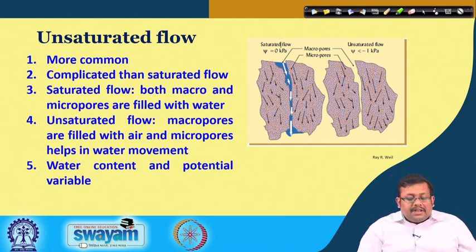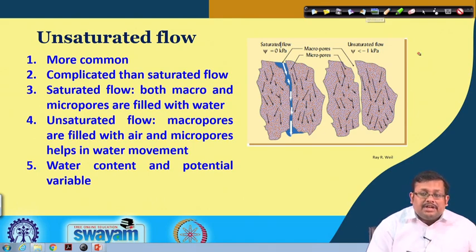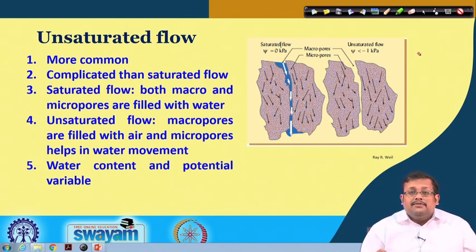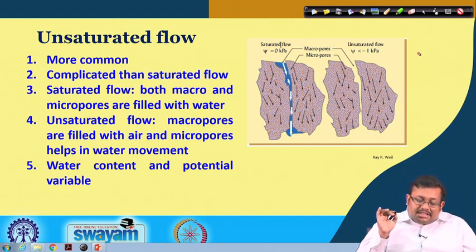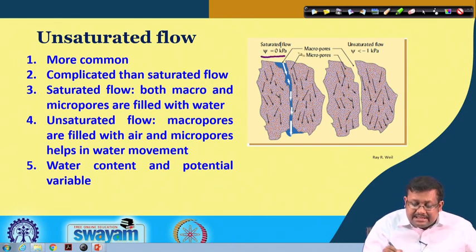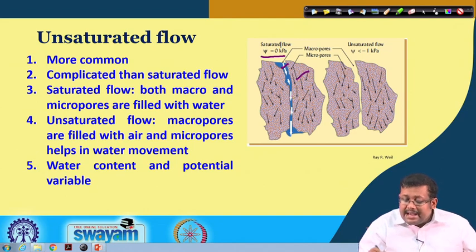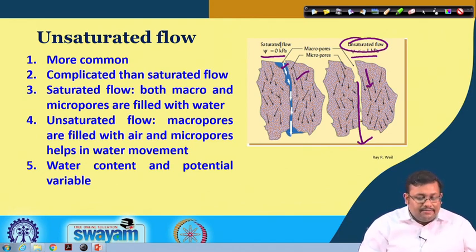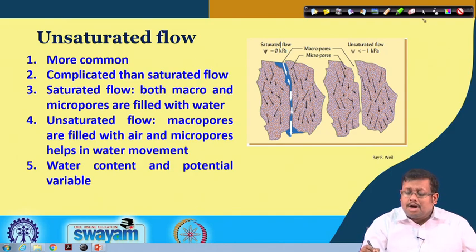Unsaturated flow is more common and more complicated than saturated flow. In saturated flow, both macropores and micropores are filled with water. In unsaturated flow, macropores are filled with air and only micropores participate in water movement. When water potential is negative, macropores drain and water flows only through micropores.